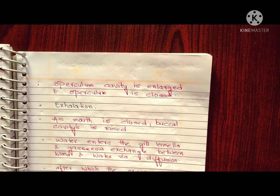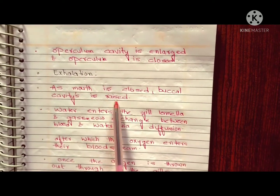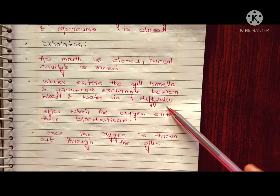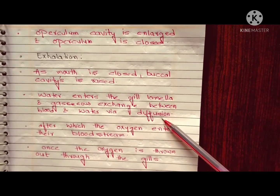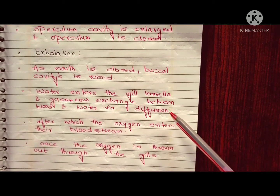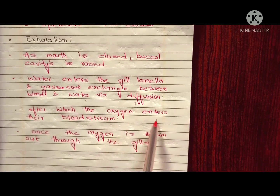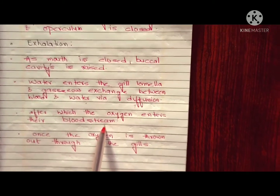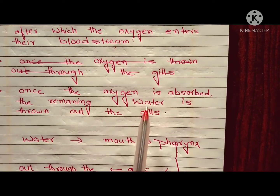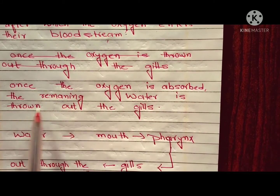During exhalation, the mouth closes and is raised. Water enters the gills and gases are exchanged between the blood and water. The dissolved oxygen in the water diffuses from higher concentration in the water to lower concentration in the blood capillaries, and after the exchange, oxygen enters the bloodstream to reach cells and tissues.